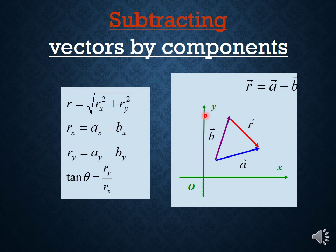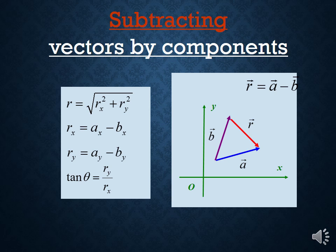This is going to be really important because you will do a lot of adding and subtracting vectors by components going forward. One critical thing to realize is that when I have vectors like A and B, I cannot just add and subtract their magnitudes. You can see that the length of R is not equal to the difference in the lengths of A and B. It would be incorrect — you have to add and subtract vectors by components, not just magnitudes.